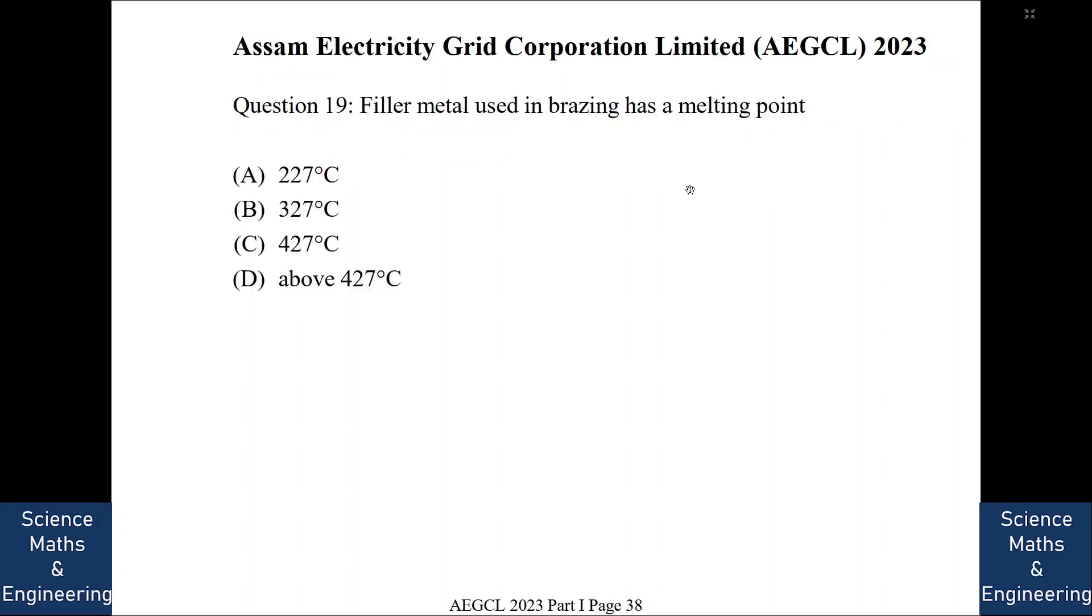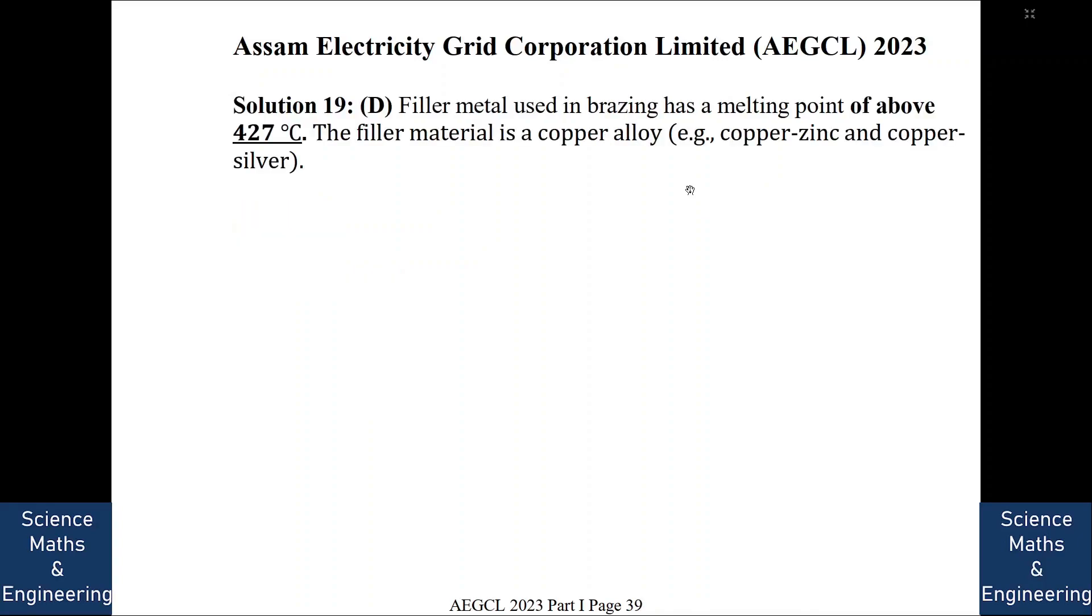Filler material used in brazing has a melting point of. See, filler material used in brazing has a melting point above 427 degree centigrade. This filler material is a copper alloy like copper zinc or copper silver alloy. We will go to the next question.